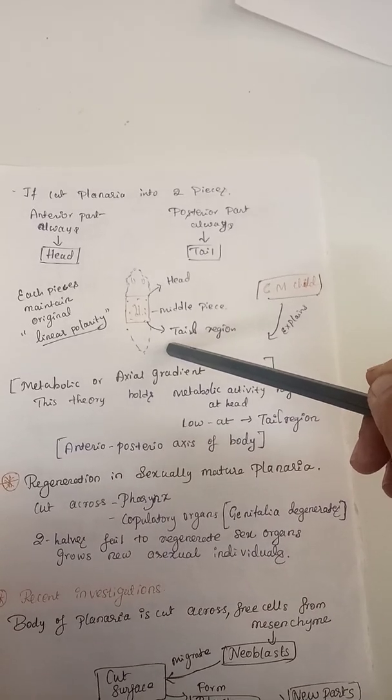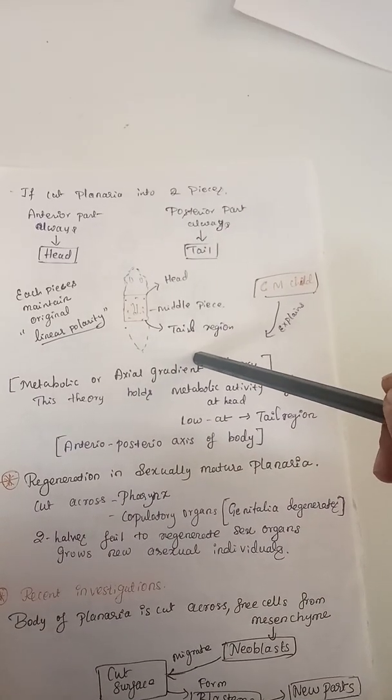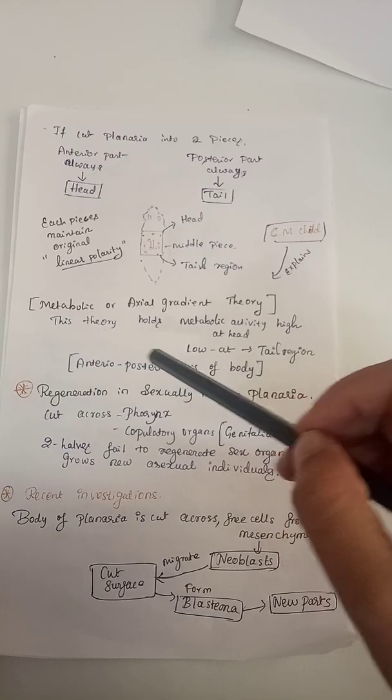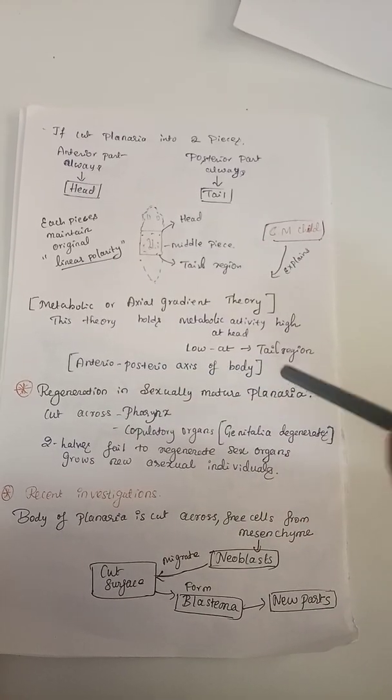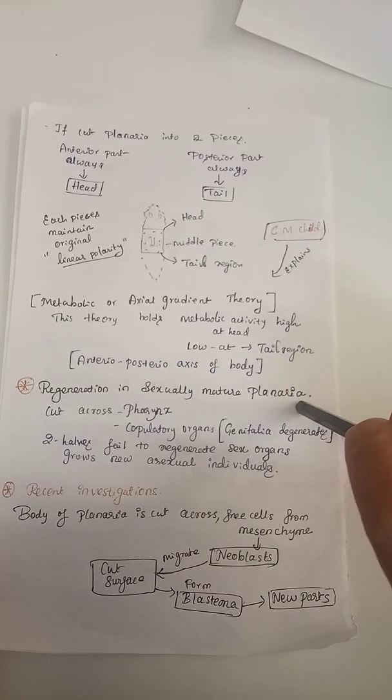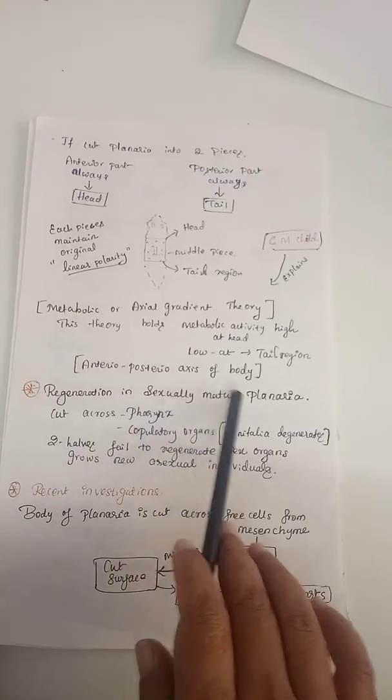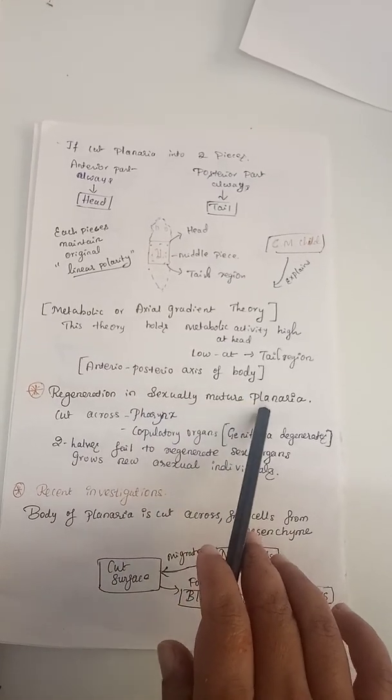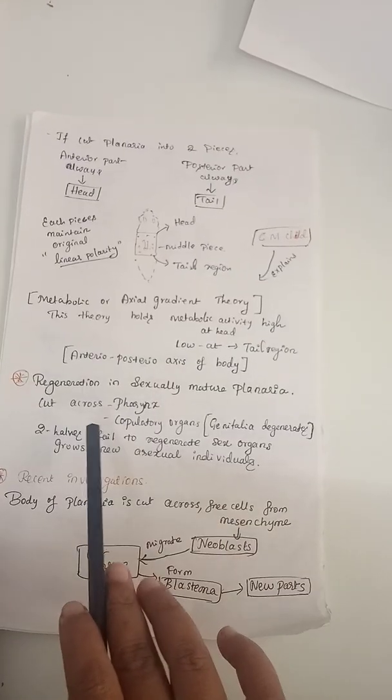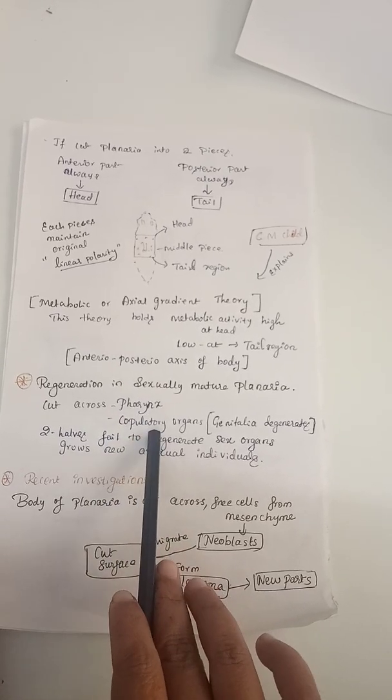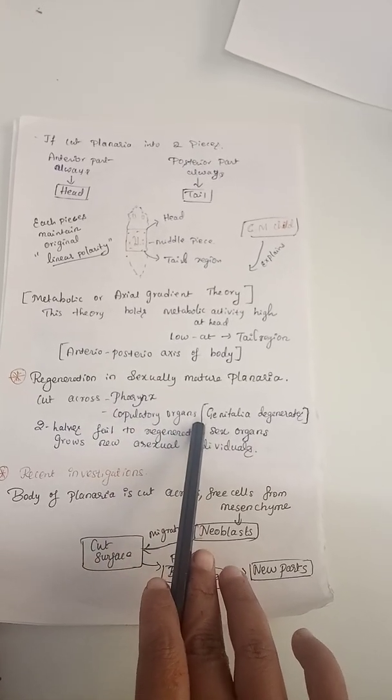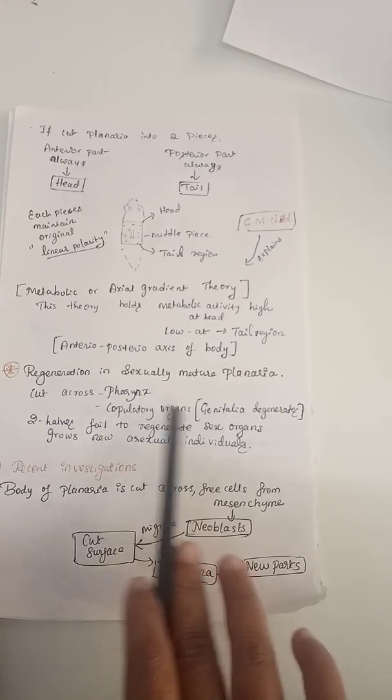In another case, regeneration in sexually mature planaria: if you cut the planaria across ovaries and copulatory organs, the two halves fail to regenerate sex organs. The genitalia degenerates and they form asexually developed new individuals.